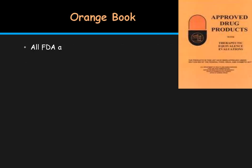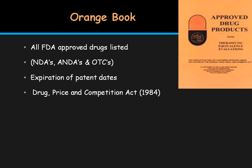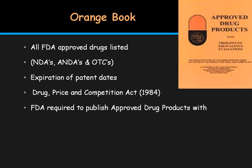What is the Orange Book? All FDA-approved drugs are listed in the Orange Book — named for the orange color of its cover. It consists of lists of all FDA-approved drugs, including NDAs, ANDAs, and OTCs, along with expiration dates of patents. Under the Drug Price Competition and Patent Term Restoration Act of 1984, the FDA is required to publish approved drug products with their therapeutic equivalence evaluations.